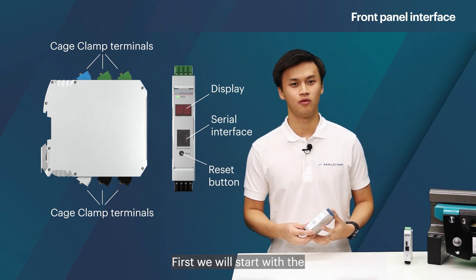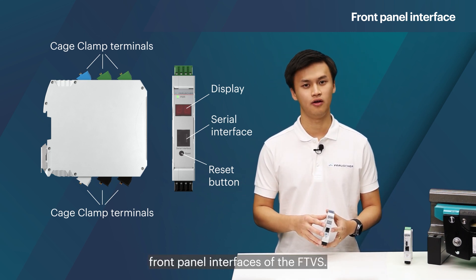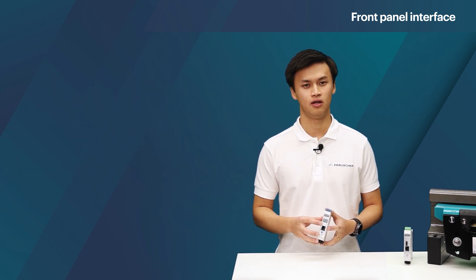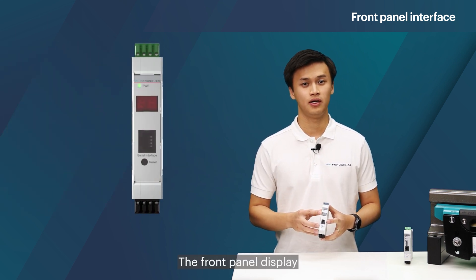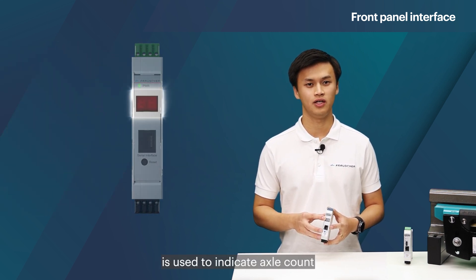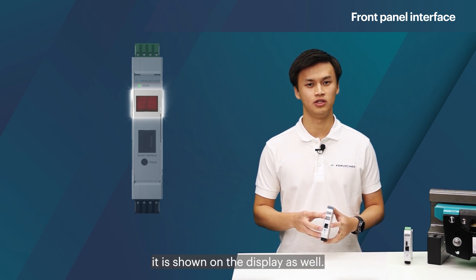First we will start with the front panel interfaces of the FTVS. The front panel display is used to indicate axle count in the track section, and in case of any errors it is shown on the display as well.